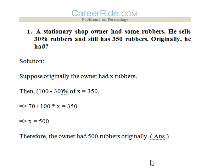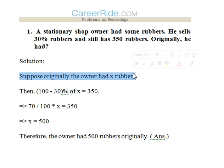So let's begin. First question: a stationary shop owner has some rubbers. He sells 30% rubbers and still has 350 rubbers. So originally he had how many rubbers? Now we don't know the original number of rubbers, so we will assume the original number of rubbers to be x.